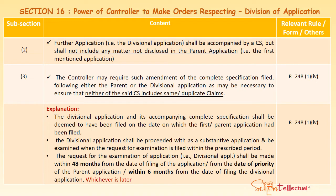The divisional application shall be proceeded with as a substantive application — that is, a separate application — and will be examined when the request for examination is filed within the prescribed period. The request for examination for a divisional application is to be made within 48 months from the date of filing or the date of priority of the parent application, or within 6 months from the date of filing of the divisional application, whichever comes later. The relevant rule is Rule 24B(1)(4).